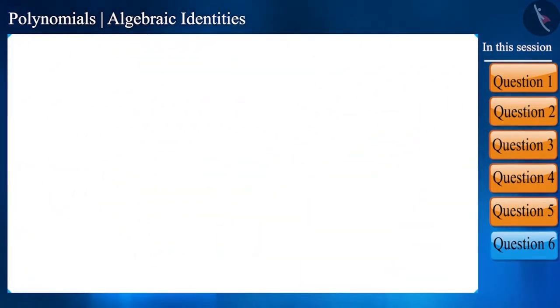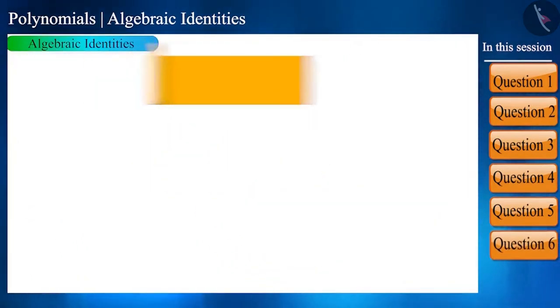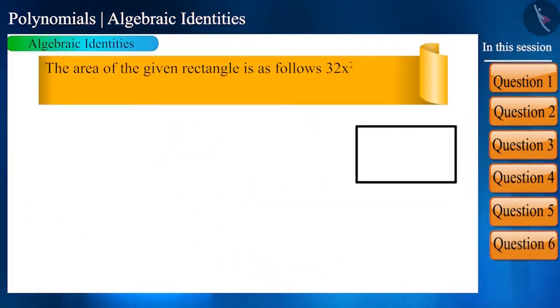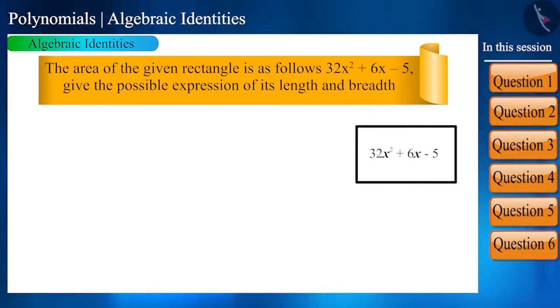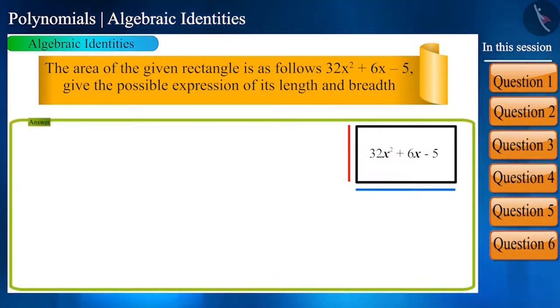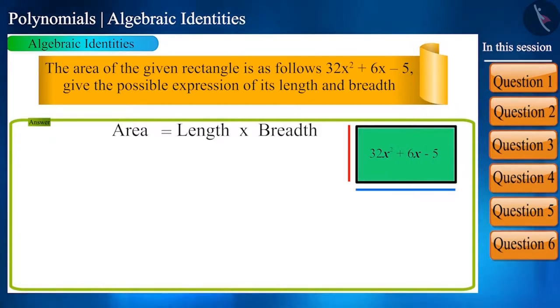And now let's take the last question of this session. The area of the given rectangle is as follows: 32x² + 6x - 5. Give the possible expression of its length and breadth. Friends, the area of a rectangle is length multiplied by breadth. The area of a rectangle is a quadratic polynomial.